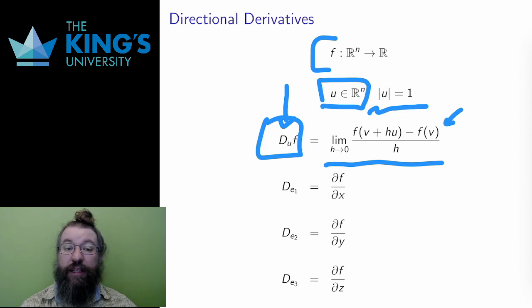This does recapture the limit definitions of the partial derivatives. The directional derivative in R3 in the unit direction e₁ is the partial in x, and in the unit direction e₂ is the partial in y, and finally, the directional derivative in the unit direction e₃ is the partial in z.